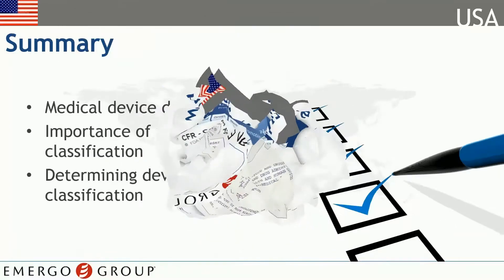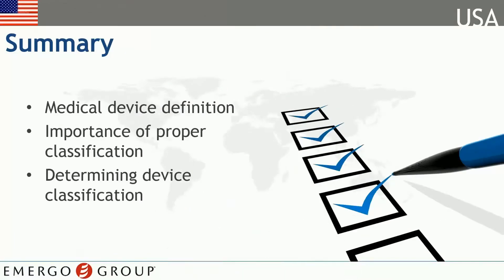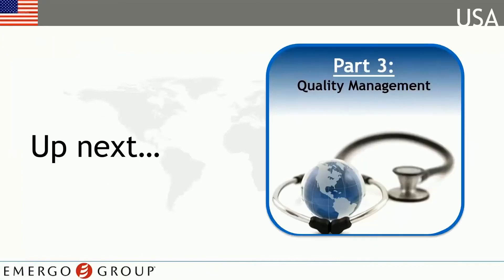That brings us to the end of this section. We discussed the definition of a medical device and how important proper classification is. We then took a look at the distinctions between classes and how you go about determining your device's classification. In our next module, we'll examine Quality Management Systems.